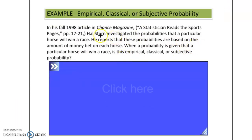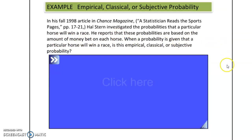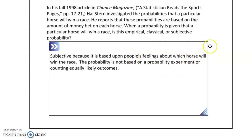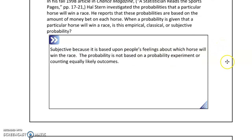Hal Stern, a statistician, investigated probabilities in horse racing based on the amount of money bet on each horse. Is this empirical, classical, or subjective? We don't know everything about the horse, the track, the diet, or the weather that day — so this is all going to be subjective, because it's based on people's feelings about which horse is going to win the race. It's not based on anything verifiable in advance.